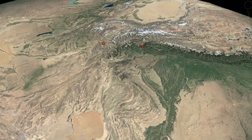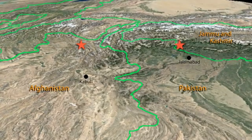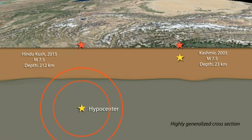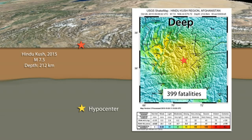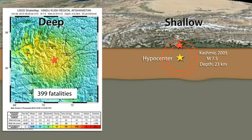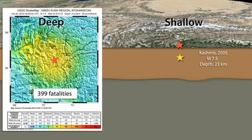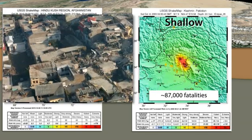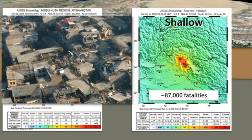To see the effect of depth, let's compare two earthquakes of the same magnitude with nearby epicenters but hypocenters at different depths. In 2015, the magnitude 7.5 Hindu Kush earthquake occurred 212 km below Afghanistan. Although strong shaking was distributed over a broad area, only 399 lives were lost. By contrast, the 2005 magnitude 7.5 Kashmir earthquake had a hypocenter only 23 km deep. Severe ground shaking was concentrated near the epicenter, causing extensive damage to buildings, with over 87,000 fatalities.